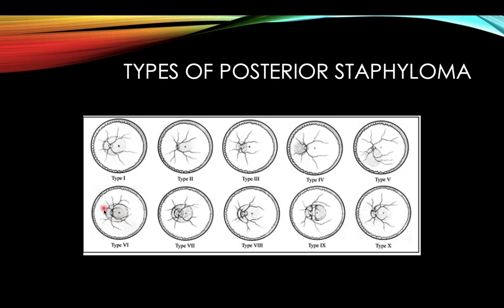From Type 6 onwards, they are combined staphylomas. Type 6 combines Type 1 and Type 2 — the entire posterior pole and temporal. Type 7 combines Type 1 and Type 3. Type 8 is a tiered structure, Type 9 is septal, and Type 10 is a plicated staphyloma.